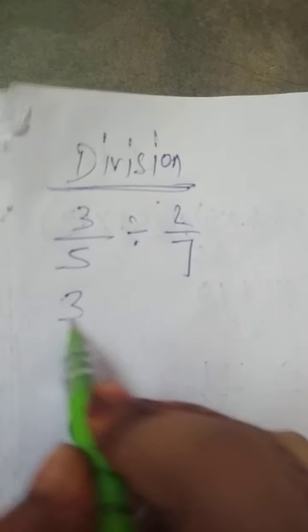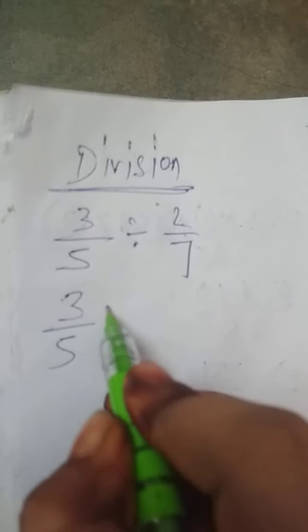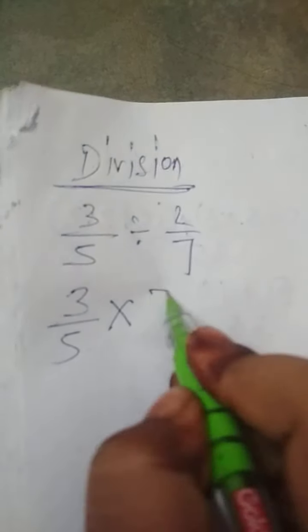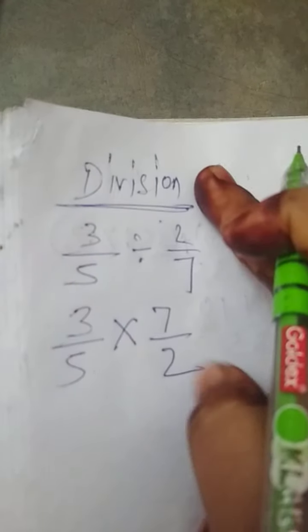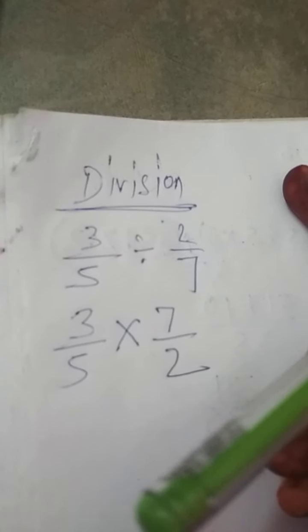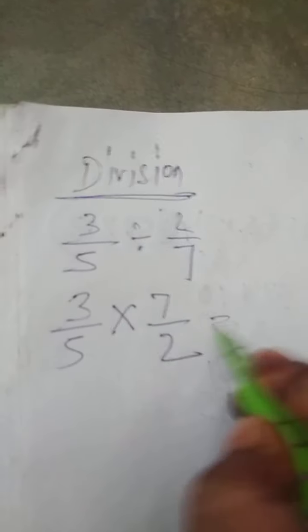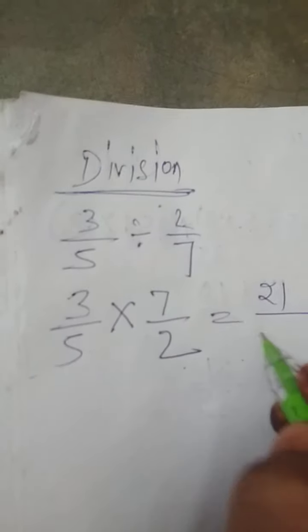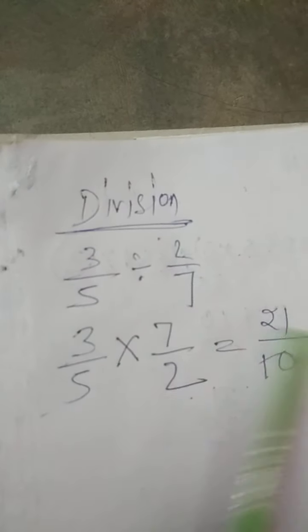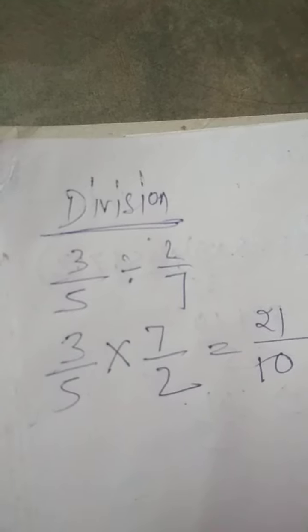We will go for the next: division of fractions. How we will do it — look at here. The question given: 3 by 5 divided by 2 by 7. What we have to do: the first fraction remains the same, then multiply, then take the reciprocal of the second — means 7 by 2. Now multiply: 3 into 7 is 21, and 5 into 2 is 10. So the answer is 21 by 10. This is the division process.